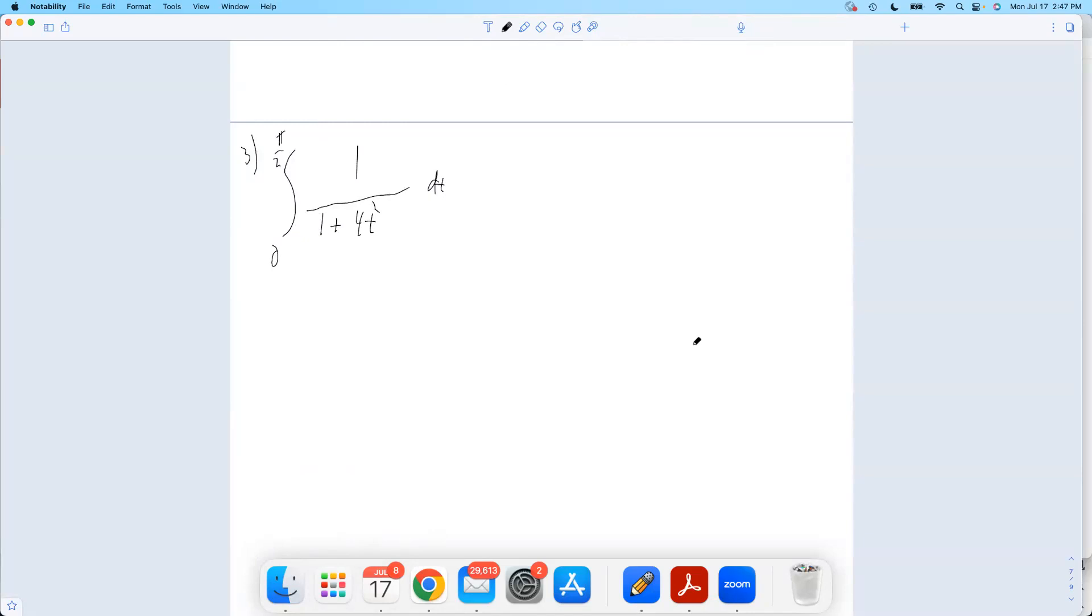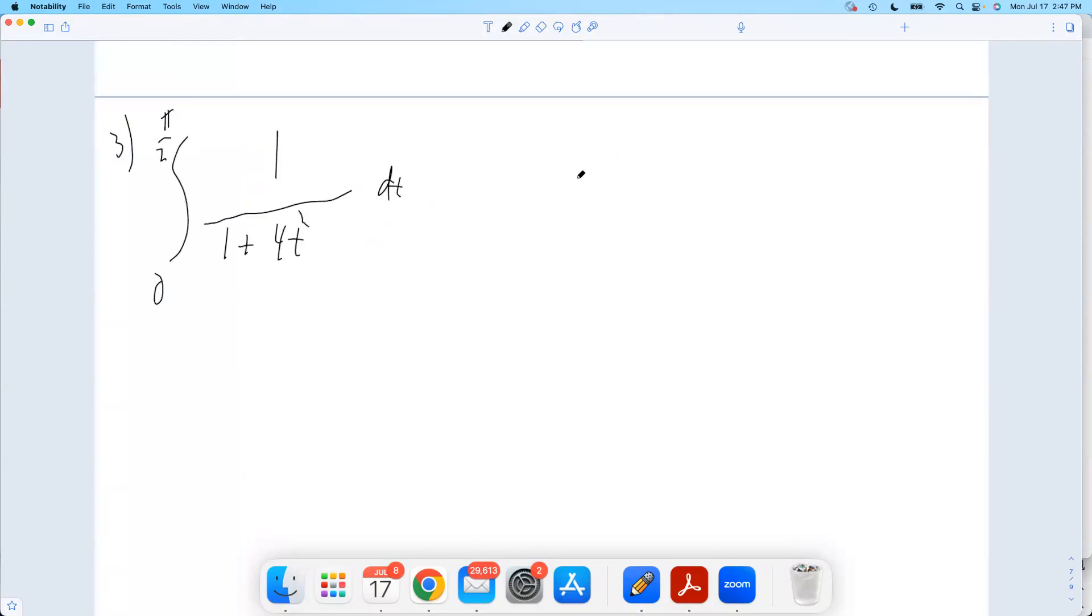Okay, now here, I keep saying call the bottom u. Let's see if that works here. There are no rules when it comes to integration by substitution. If one thing always worked, that would just be the way. That's not the case here. If I let the bottom be u,